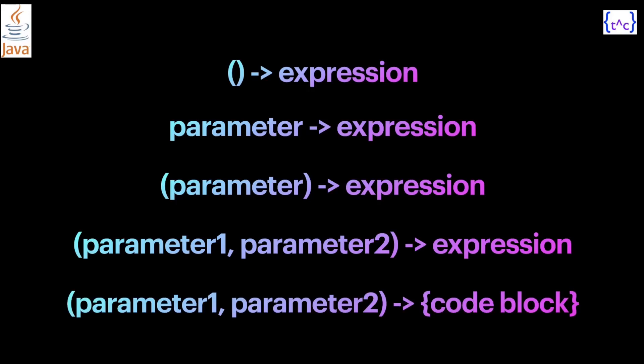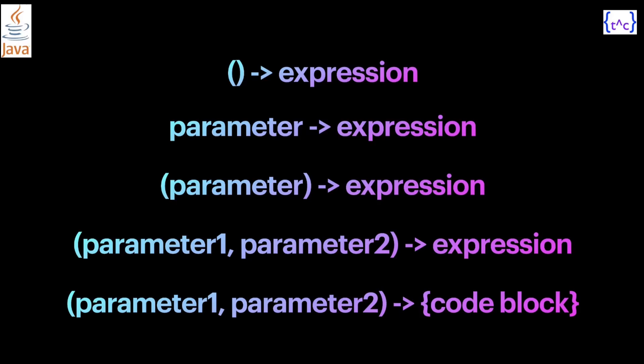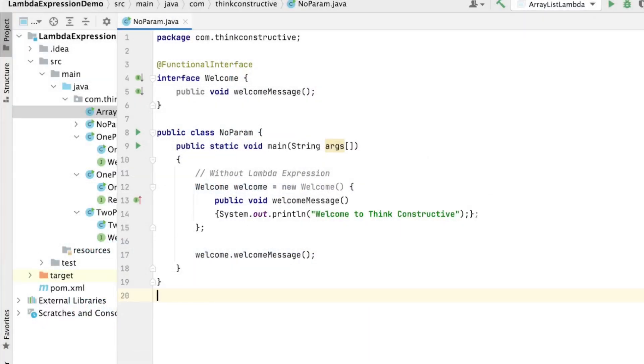Here, code block means if there are more than one statement you should keep them inside curly braces. If there is only one statement, you can write it without curly braces — either way is fine. These are the variety of syntaxes of lambda expression. I will be using IntelliJ IDEA as an editor; you can use any Java editor of your choice.